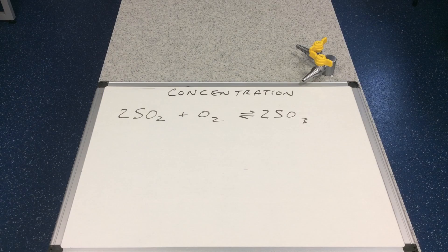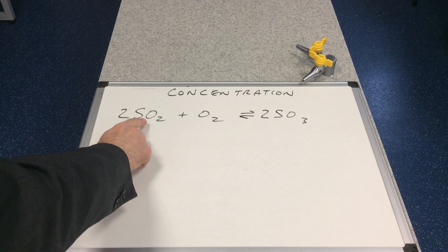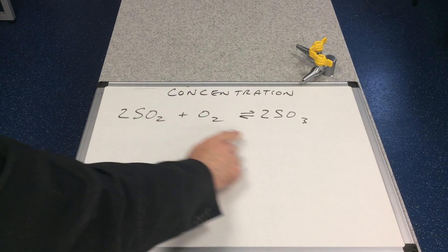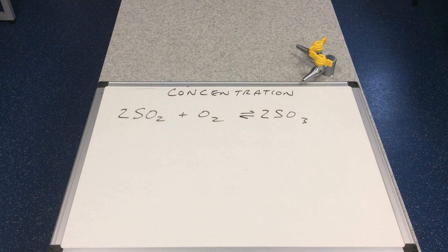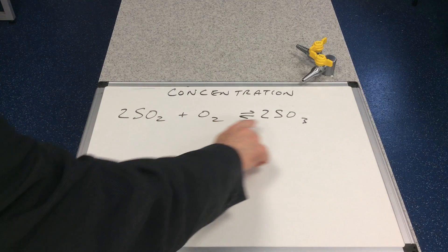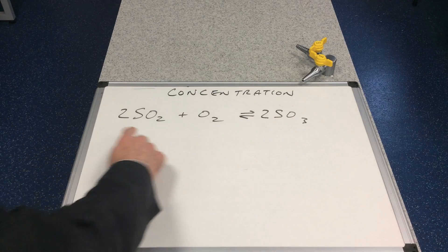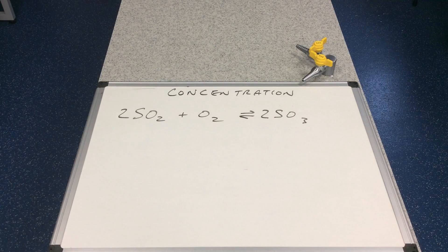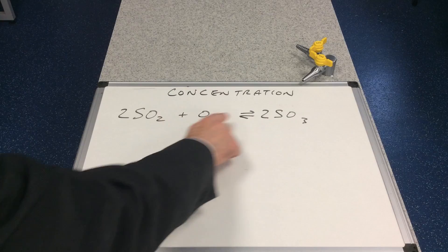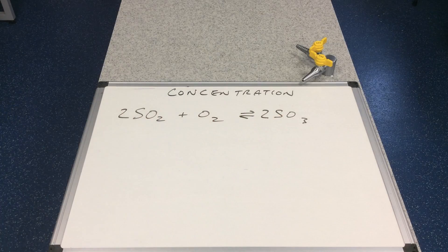We'll start with concentration. I've drawn on the whiteboard a dynamic equilibrium that exists between sulphur dioxide, oxygen, and sulphur trioxide. When this is at dynamic equilibrium, the rate of the forward reaction equals the rate of the reverse reaction, and because of that the concentrations of everything in the system remain constant.